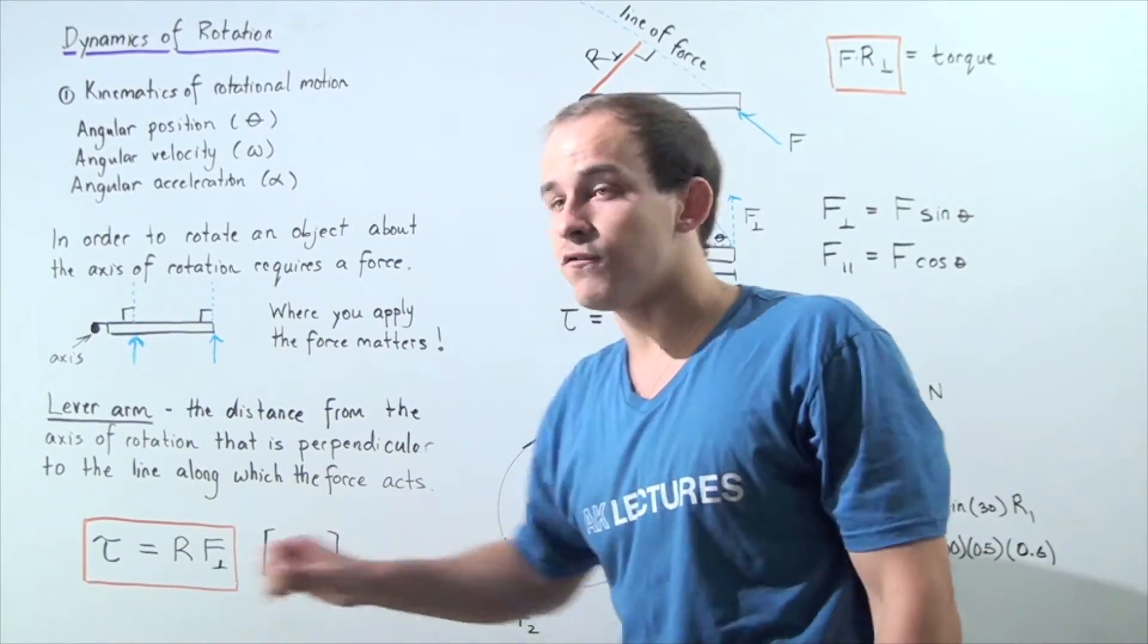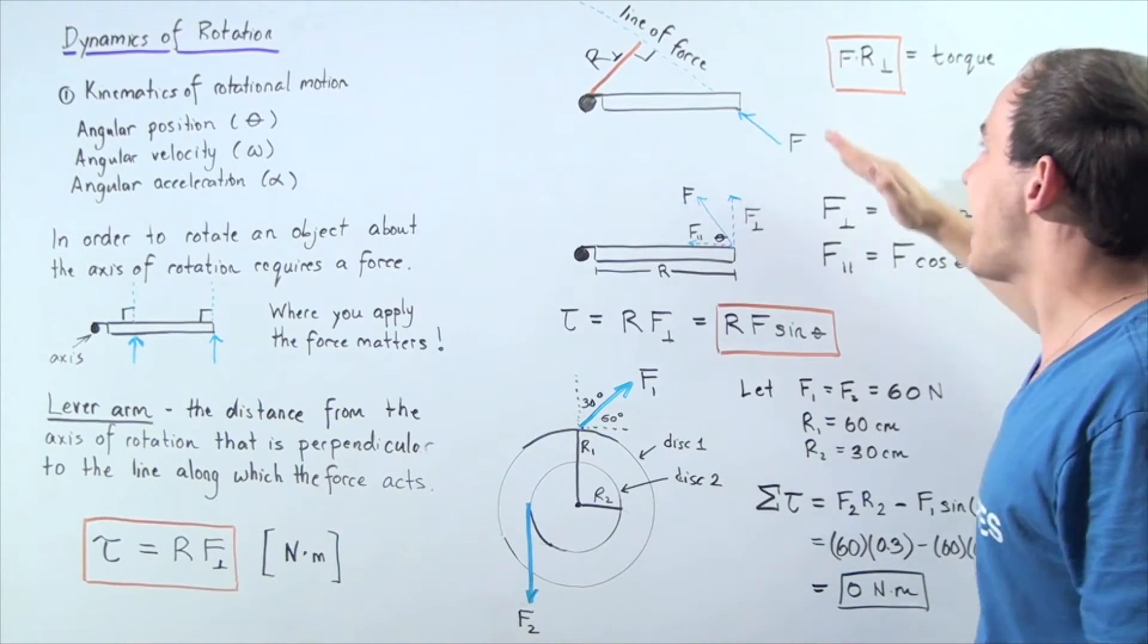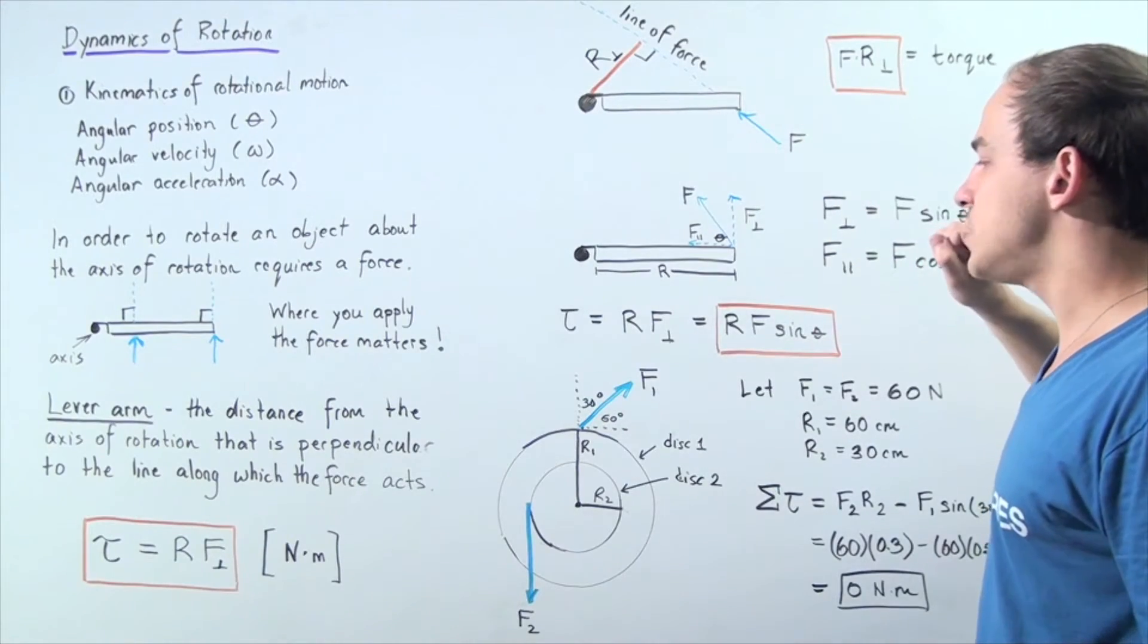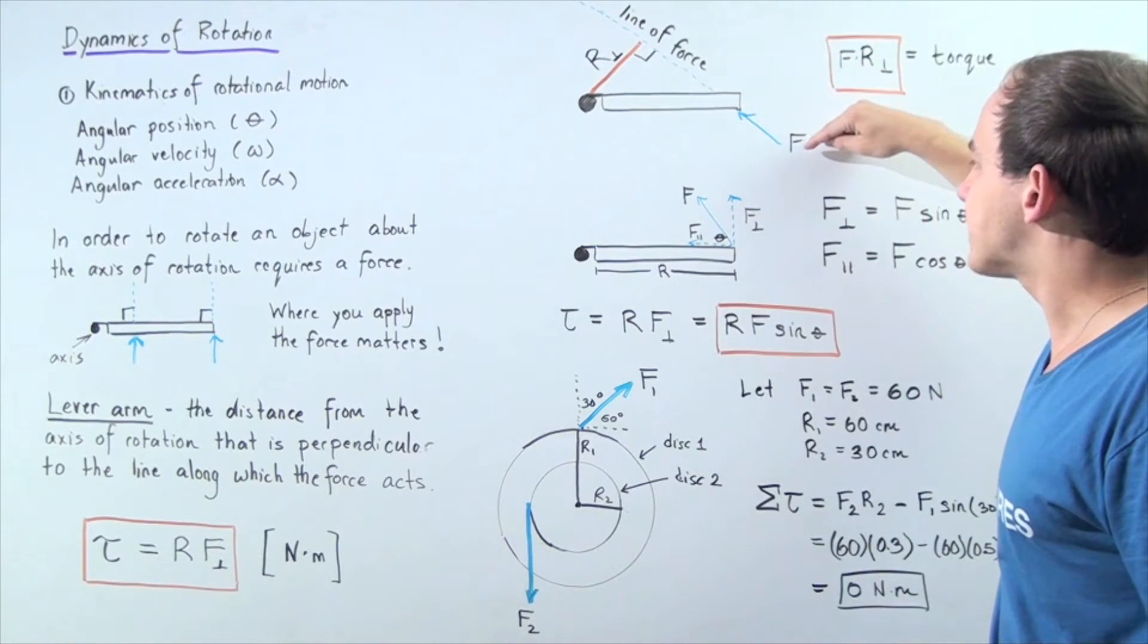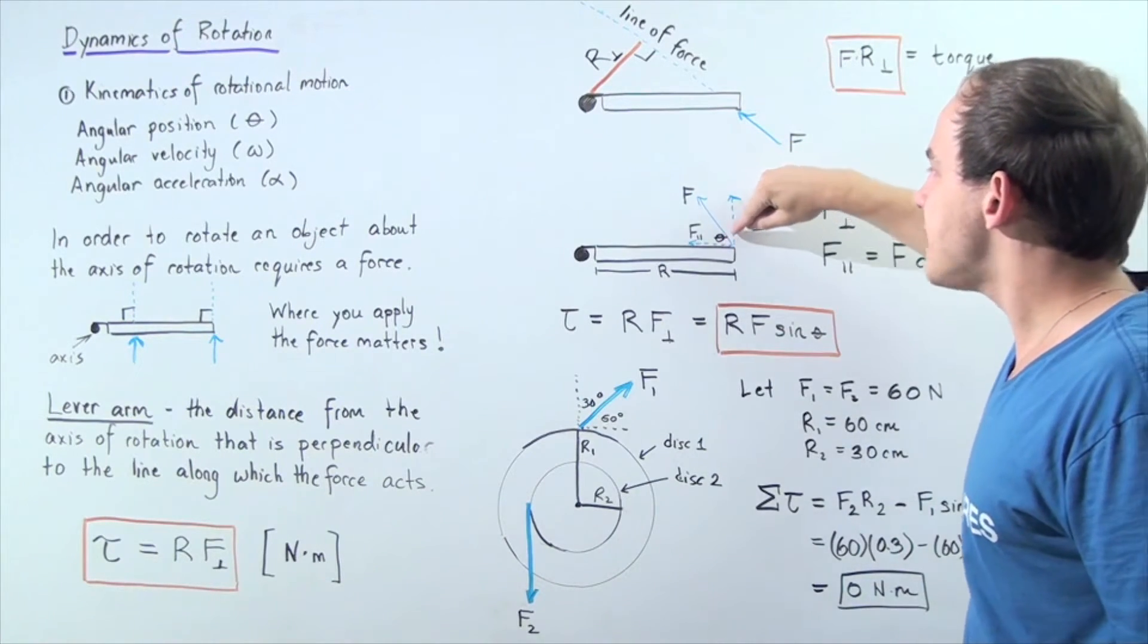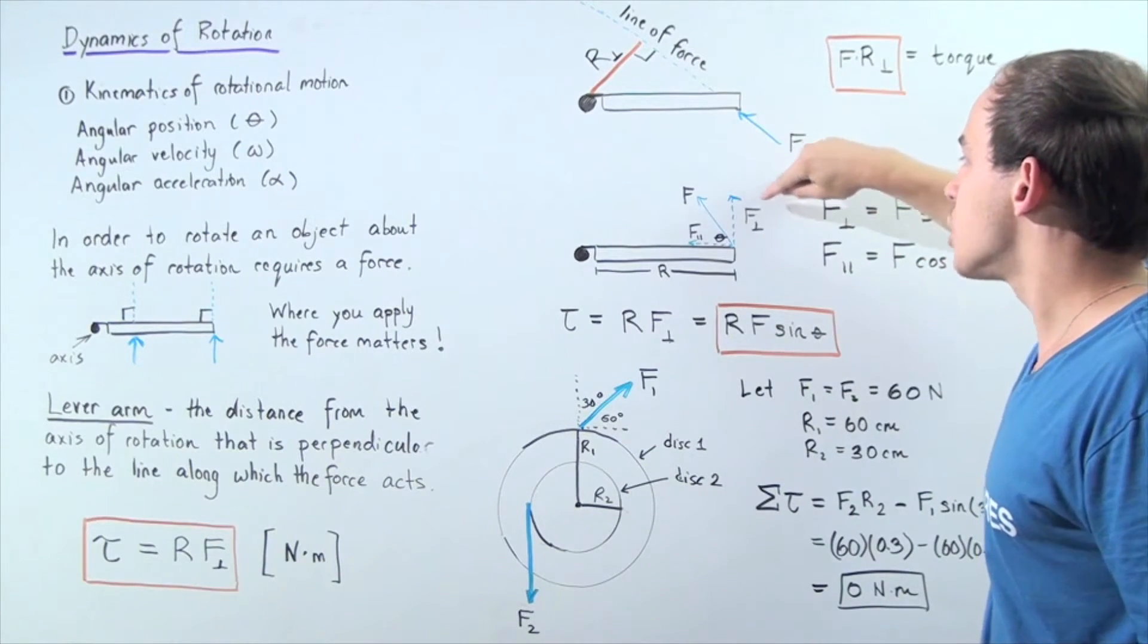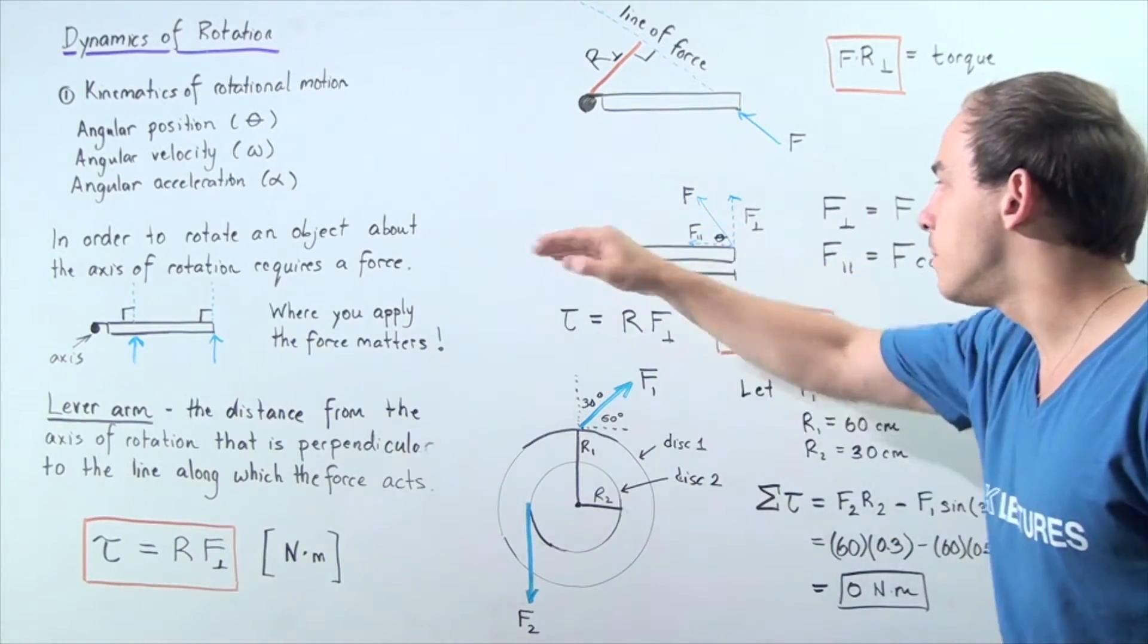So not only can we use this formula, we can also use this formula where torque is equal to the force that acts at some angle multiplied by the lever arm, or the distance from the axis of rotation that is perpendicular to the line of force. Now let's examine the same exact force that acts at the same exact angle. Let's call the angle theta. Notice this force is a two-dimensional force.